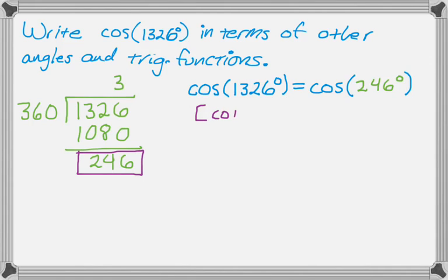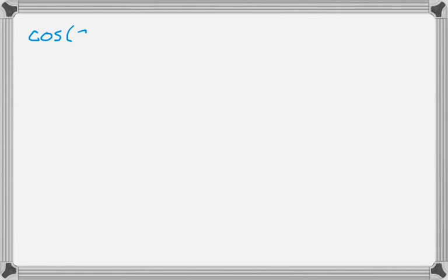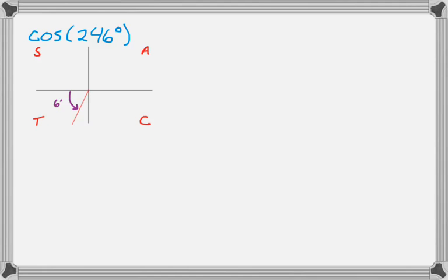The reason that's true is that coterminal angles always give the same result when you evaluate trig functions. So now I have cosine of 246 degrees, and what I want to do is draw a picture. I'll use the ASTC mnemonic.